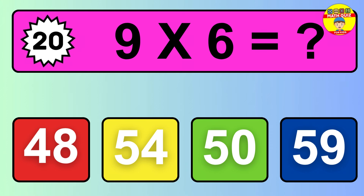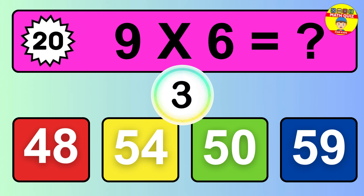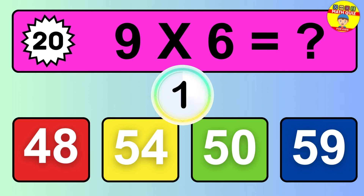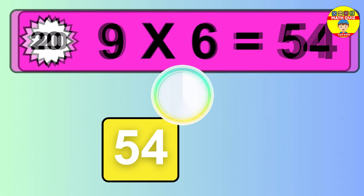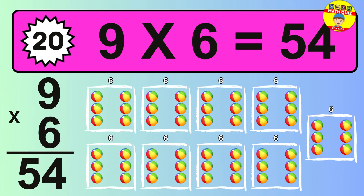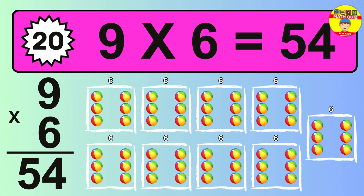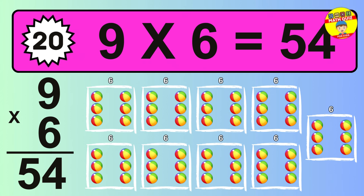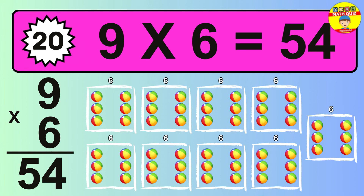Question 20. 9 times 6 equals what? The answer is 9 times 6 is 54. To calculate, we have 9 groups with 6 balls each one. So, how many balls do we have? 54 balls.